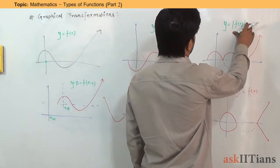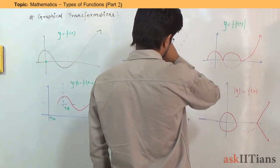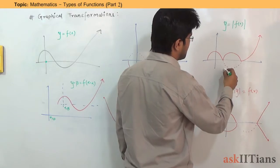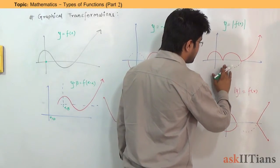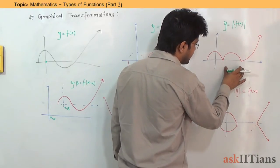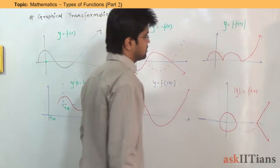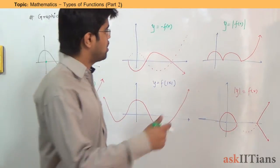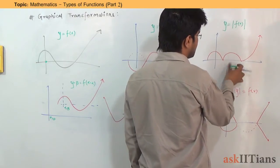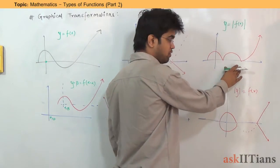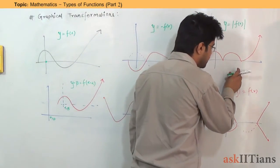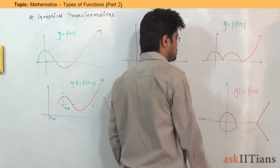For y = |f(x)|, this is a very special kind of transformation. Whatever the negative values of your graph are, neglect them and take the image of that negative part reflected in the x-axis. This is because y = |f(x)| always gives a positive output — negative outputs are not desired and will turn into positive.